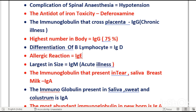Differentiation of B-lymphocytes is done by IgD. In allergic reactions, IgE increases in the blood. The largest immunoglobulin in size is IgM, and IgM levels rise in acute illnesses like malaria and typhoid.